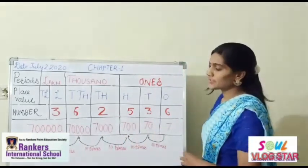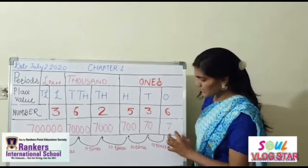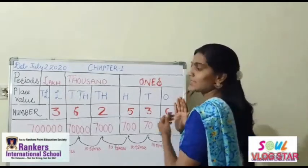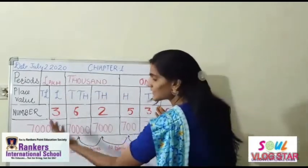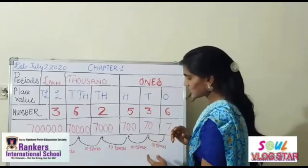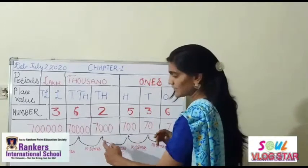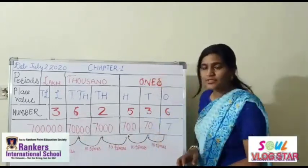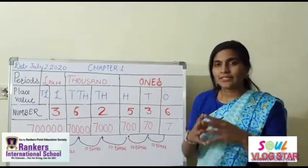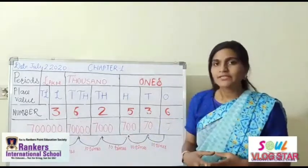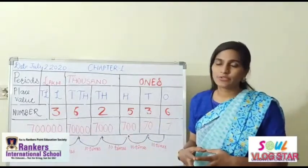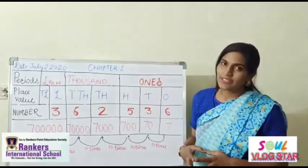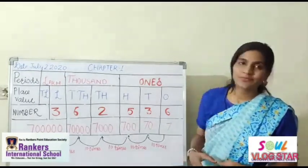One more thing I want to tell you — as you move from the right side to the left side, the place value increases 10 times. You can see that clearly in the table. So children, we have completed the first part of our chapter. The next portion we will complete in our next video. Till then, goodbye and thank you.